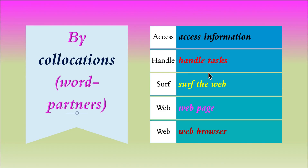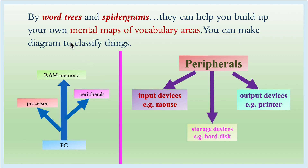Next, by collocations — you can think of these as word partners. For example, 'access information', 'handle tasks', 'surf the web', 'web page', 'web browser', and so on. We call such sets of words collocations. With the help of collocations we can also try to learn new terms in computer science.